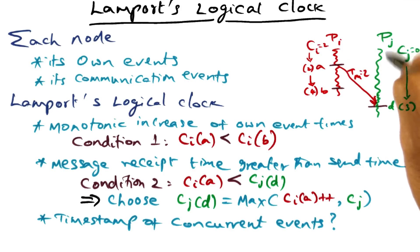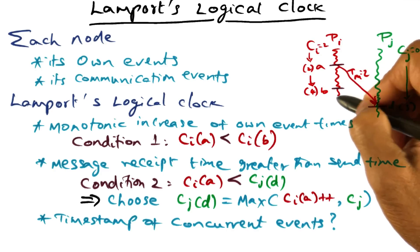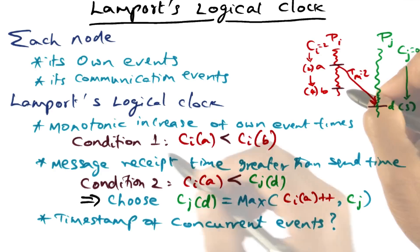For instance, process PJ has no idea about the local computational events of PI.